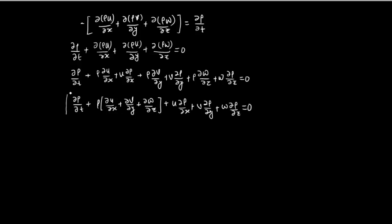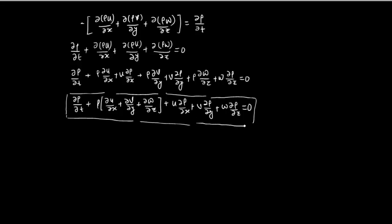This is the generalized form of the continuity equation, valid for all types of flows because density is a variable function of space and time coordinates, and velocity is also a variable function. This is the general form of the continuity equation.